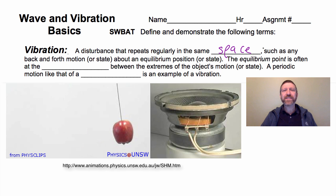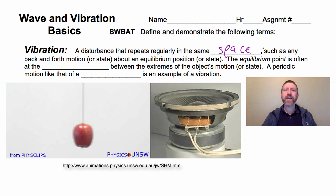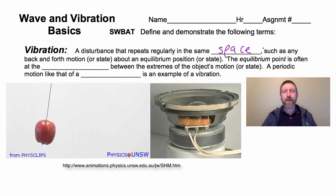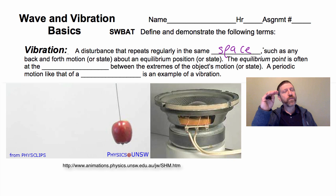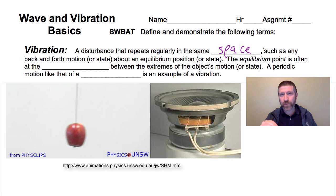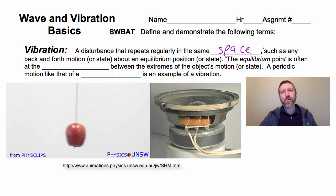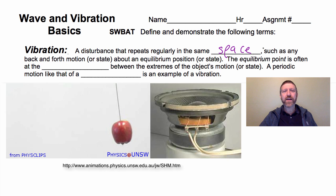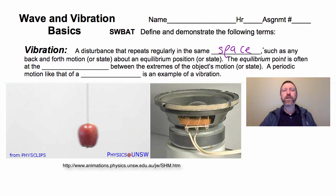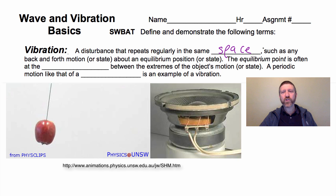Or you could have a sound like this — 'la' — and what's happening is the pressure is going from atmospheric pressure to a little above, to a little below, to a little above atmospheric pressure, right here in front of my mouth. So that is another example of a vibration. In that case, it's going back and forth about an equilibrium state — the pressure state.